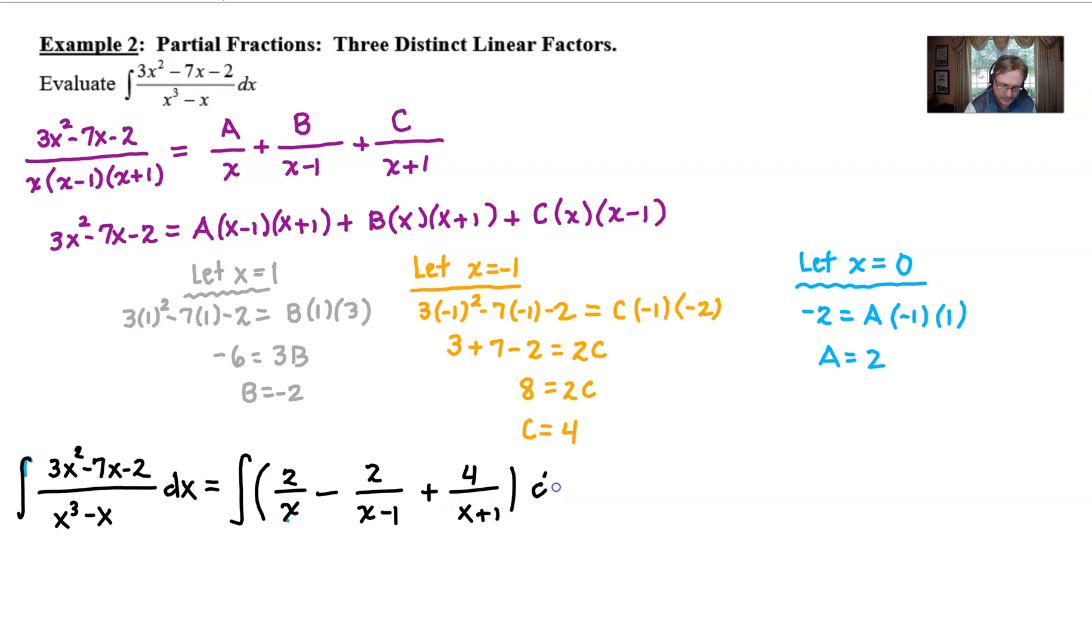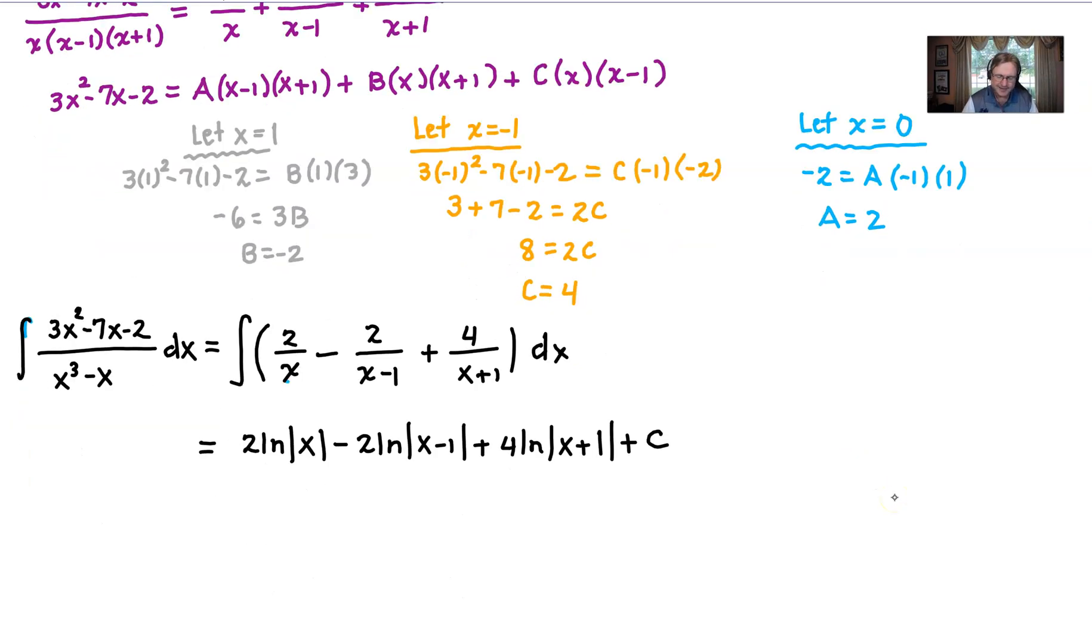And quite honestly, when you get down to this point, there's really not much to integrating this. We just have three different log forms, so we're going to put it all together. 2 times the natural log of the absolute value of x minus 2 times the natural log of the absolute value of x minus 1 plus 4 times natural log absolute value of x plus 1. Don't forget your plus C. It's a great answer. We can leave it like that. However, there is a way that you could rewrite this, simplify this a little bit.